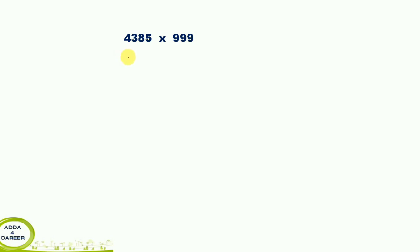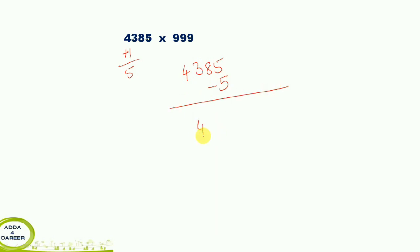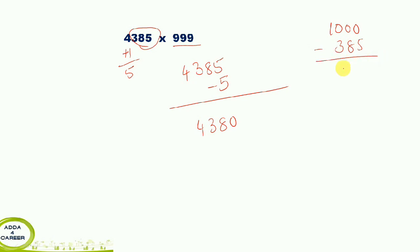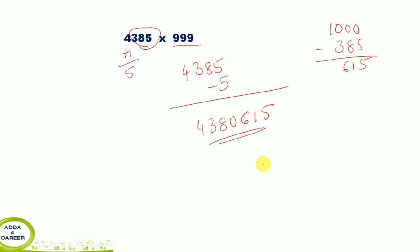Next example: 6385 into 999. Same condition as case 3. 6385 has 4 digits, so we subtract from 10000. We look at the digits 4, 3, 8, 5. Since 999 is 3 digits, the condition applies. Subtract 1: 6385 minus 1 is 6384. The complement from 999 gives 615. So the answer is 6384615. That is the base method procedure.